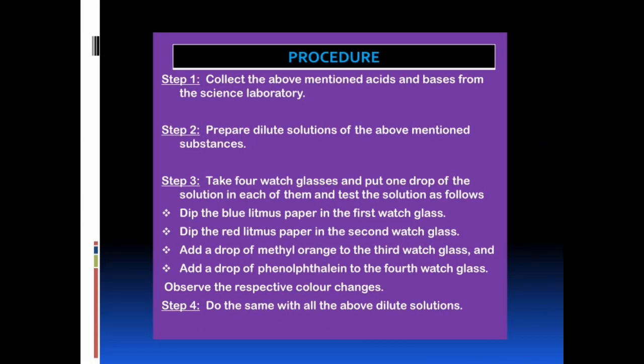Now, stepwise procedure. Step 1: Collect the above mentioned acids and bases from the science laboratory. Step 2: Prepare dilute solutions of the above mentioned substances. Step 3: Take 4 watch glasses and put one drop of the solution in each of them. Dip the blue litmus paper in the first watch glass, dip the red litmus paper in the second, add a drop of methyl orange to the third, and add a drop of phenolphthalein to the fourth. Observe the respective color changes. Step 4: Do the same with all the above dilute solutions.